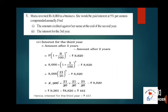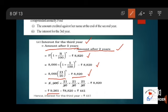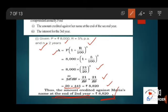Now moving to subdivision 2: interest for the 3rd year. This is calculated as: amount after 3 years minus amount after 2 years = P × (1 + R/100)^3 − 8,820 = 8,000 × (21/20)^3 − 8,820. On solving, you get 9,261 − 8,820 = Rs. 441. So the interest for the 3rd year is Rs. 441.